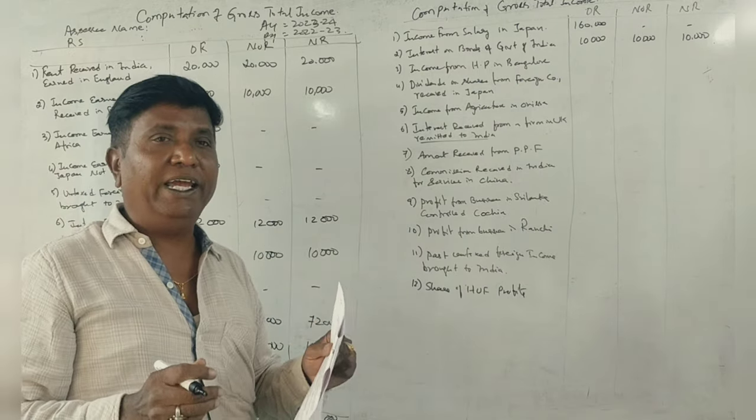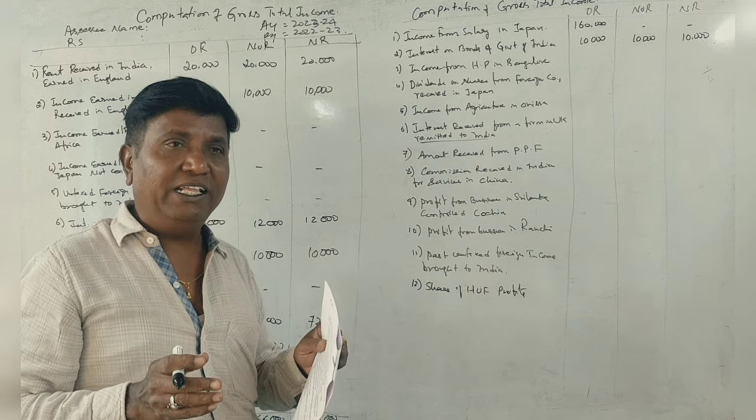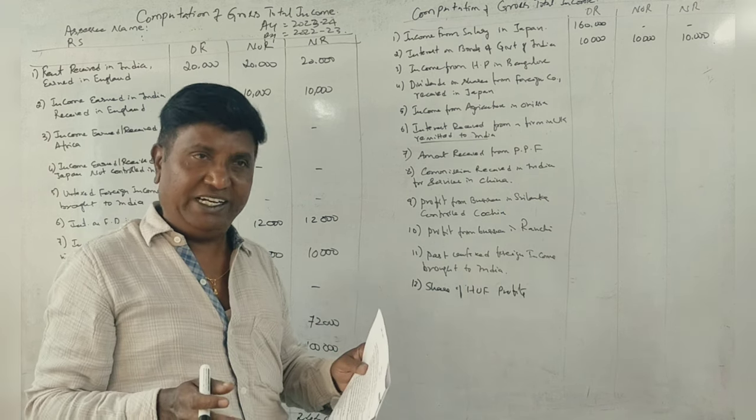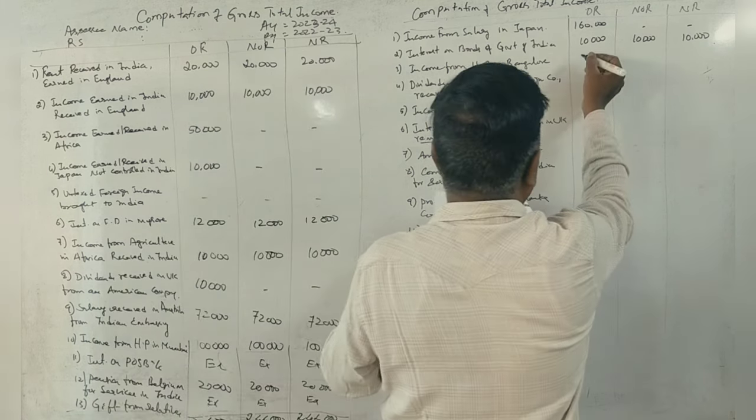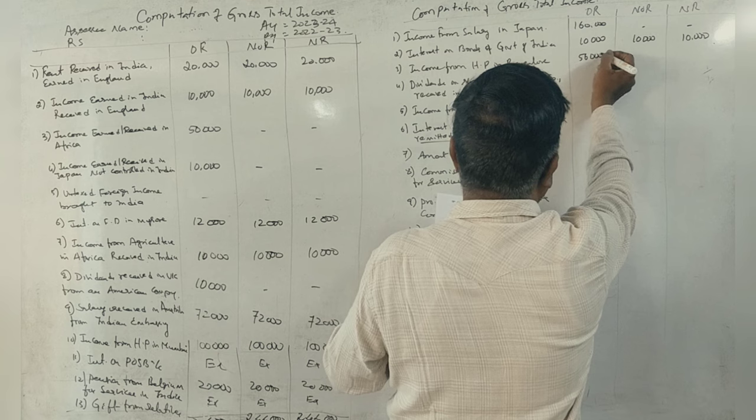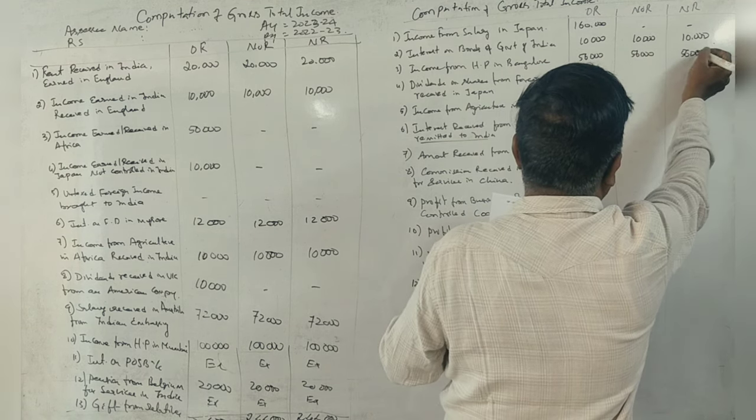Income from house property in Bangalore. House property, the income, where? Indian. Correct? Who, what bonds? 56,000. Correct?